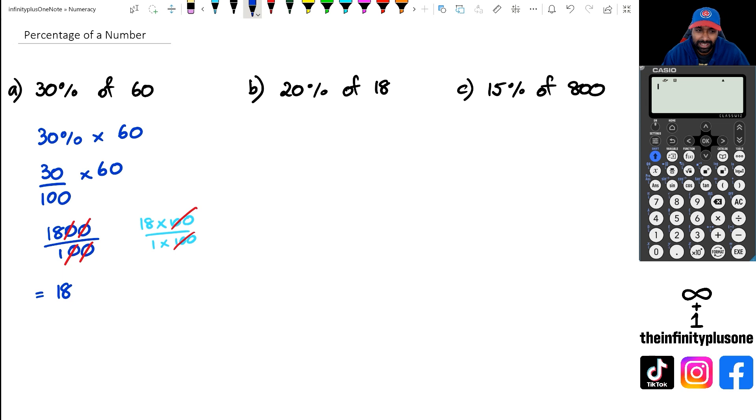Looking at question B, 20% of 18. Before I do that, I wanted to show you how to do this in the calculator: 30% of 60. What you will have to do is we need to convert that into a fraction, so we're gonna go 30 over 100 multiplied by 60.